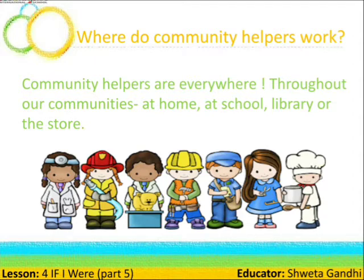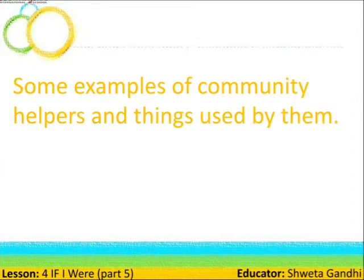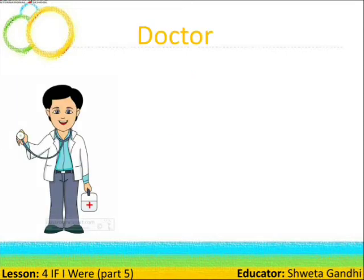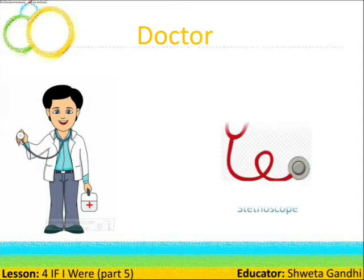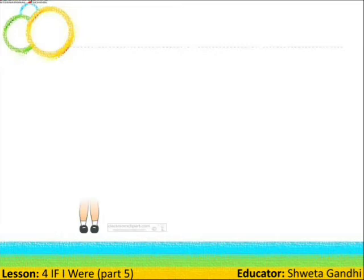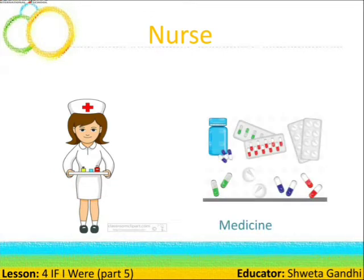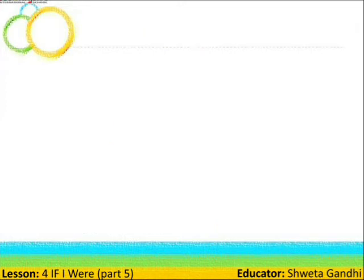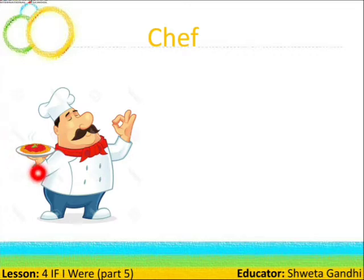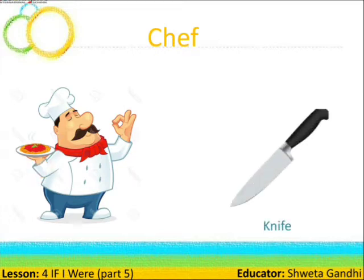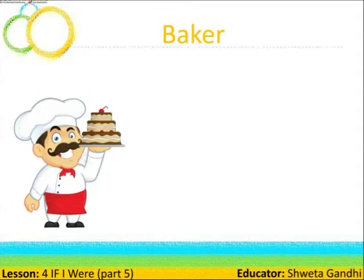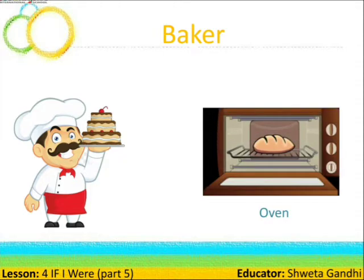Now let us see some examples of community helpers and the things they use. Who is it? He is a doctor, and the thing used by a doctor is a stethoscope. Next, she is a nurse — she takes care of patients and gives medicine on time. Third is the chef — a chef cooks food, and for chopping vegetables he uses a knife. Then the baker uses an oven to bake cakes, bread, biscuits, and cookies.